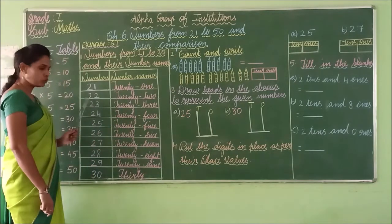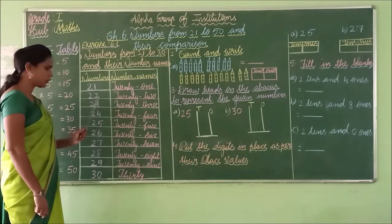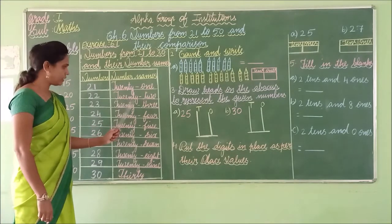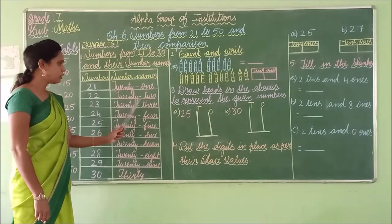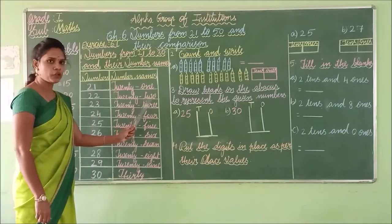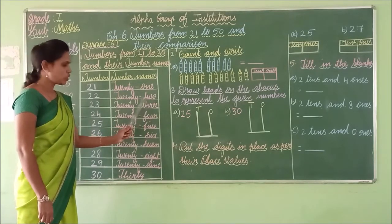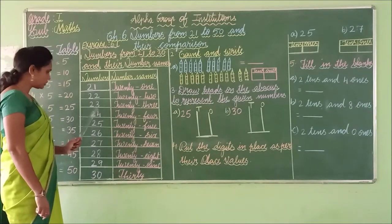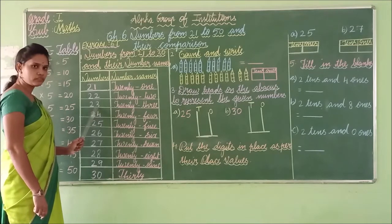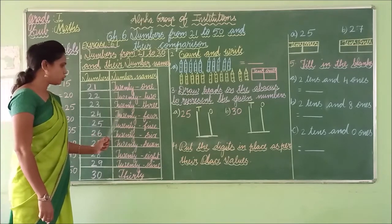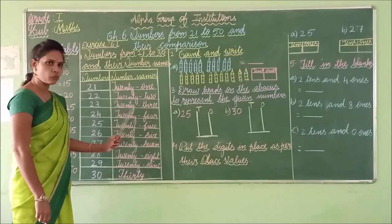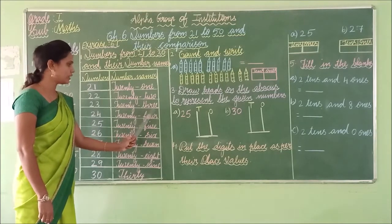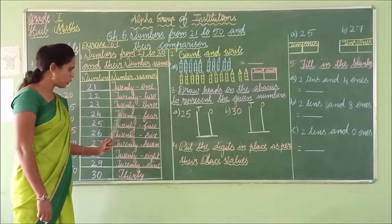22 — the number name is T-W-E-N-T-Y T-W-O. 22. 23 — the number name is T-W-E-N-T-Y T-H-R-E-E. 23.